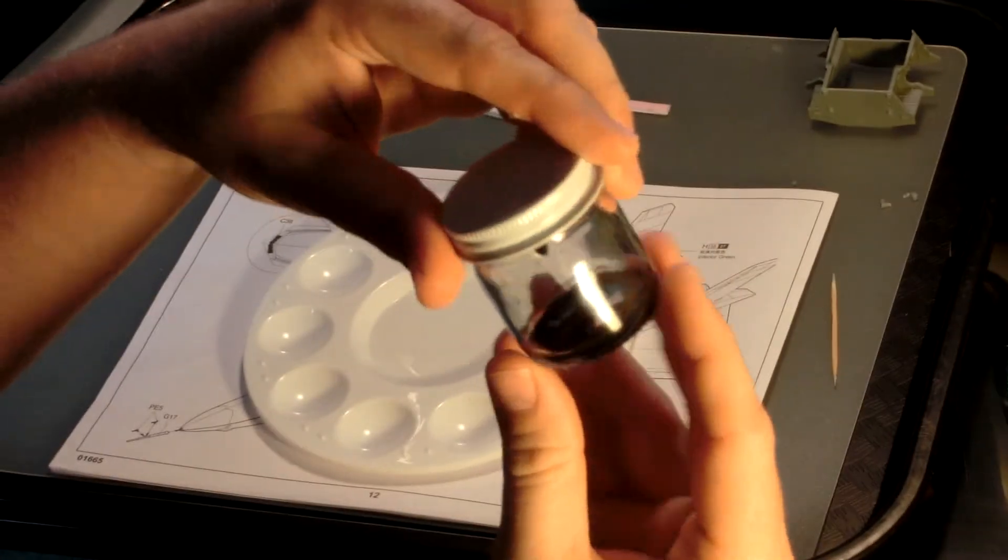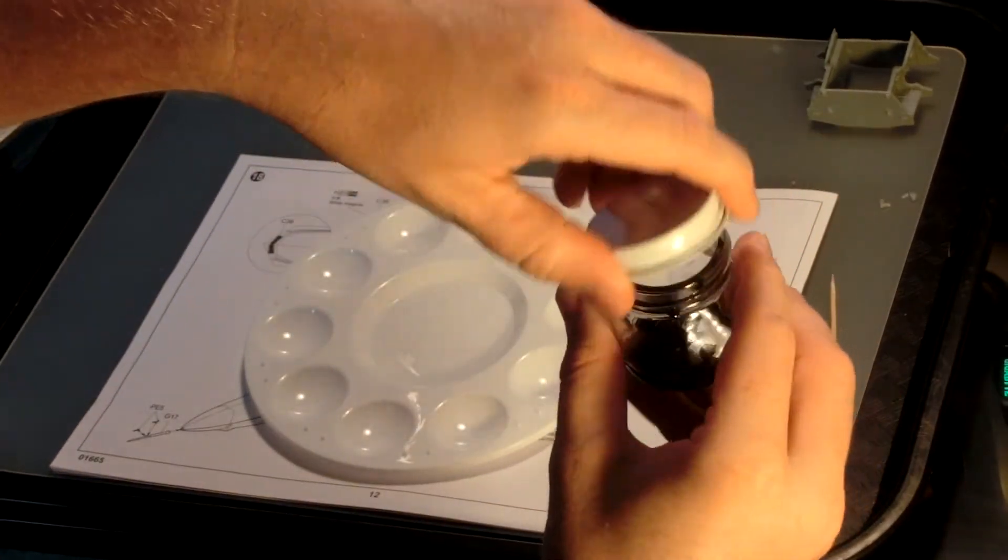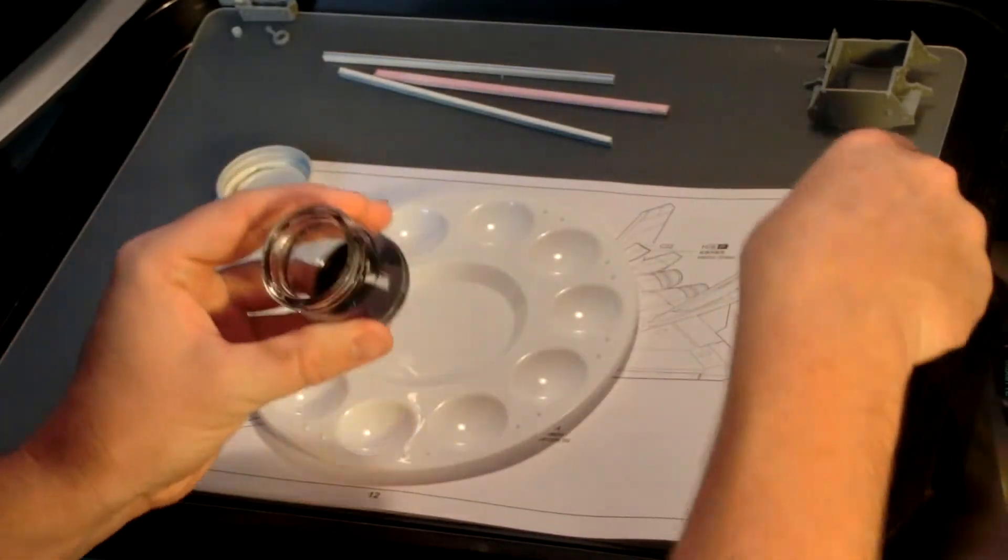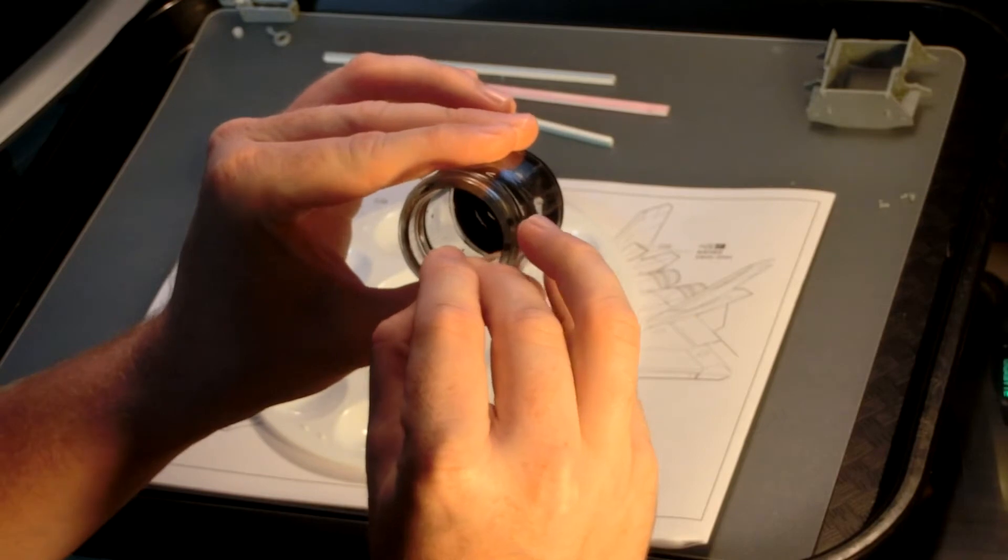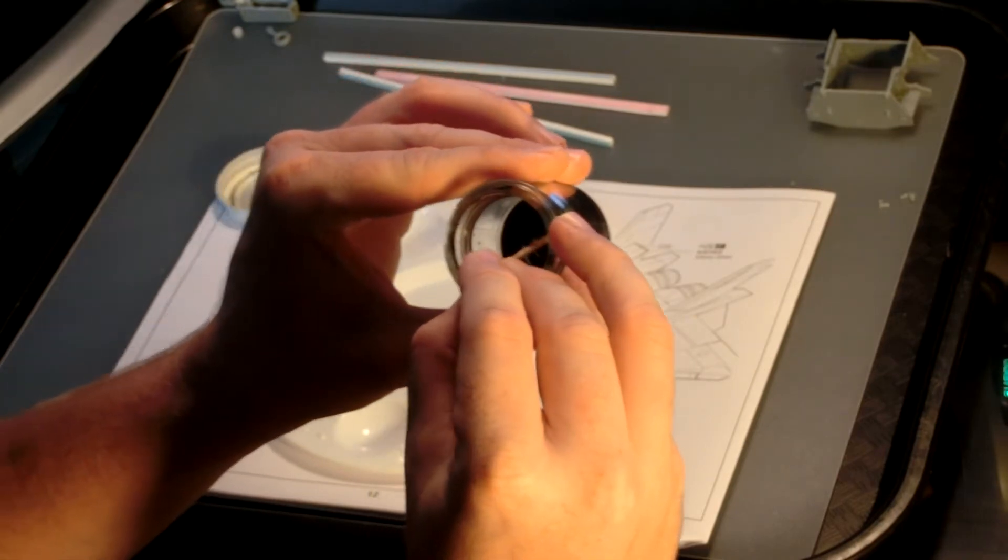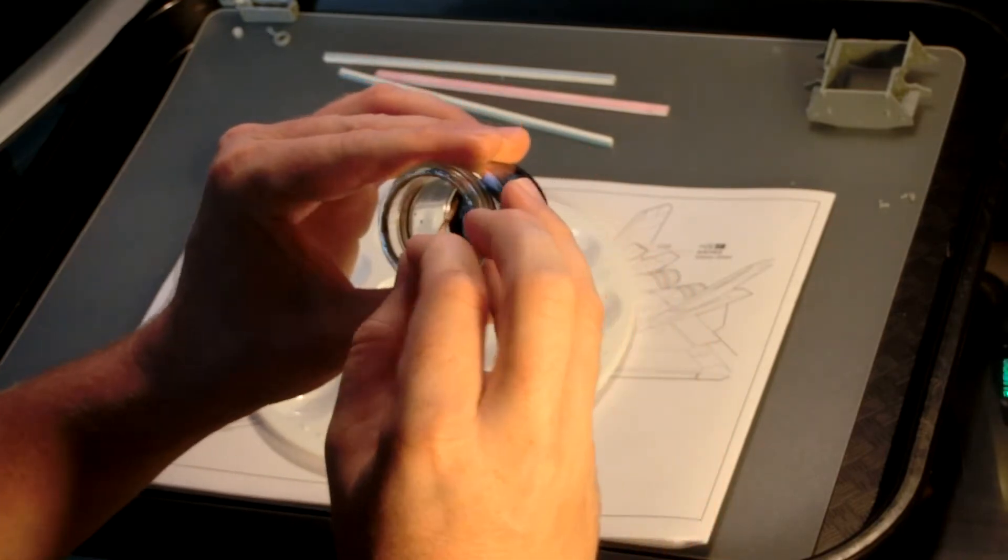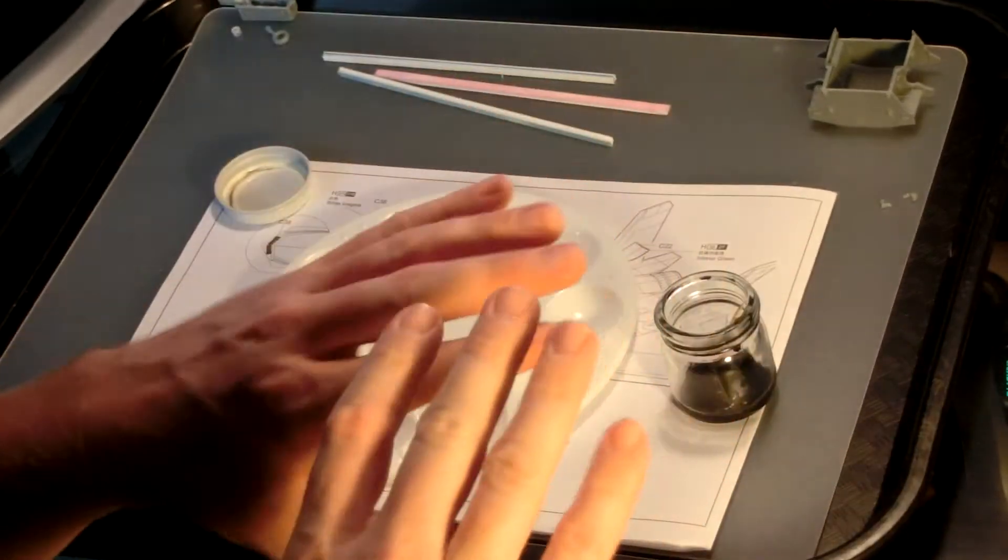When you first unbox your model club package, it may look like we've given you barely any paint. It's a little bit misleading, but because we had to separate paint out into so many small jars, it will be somewhat dried out looking or resemble a very thick paste.